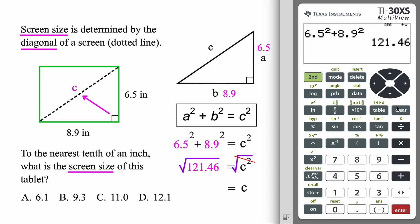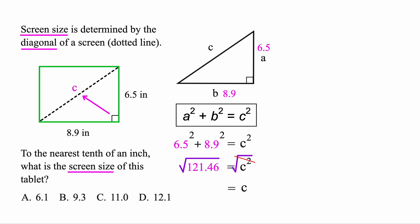So let's clear. We'll go ahead and do second square root. 121.46. And boom. So 11.02. Let's go ahead and copy that down.